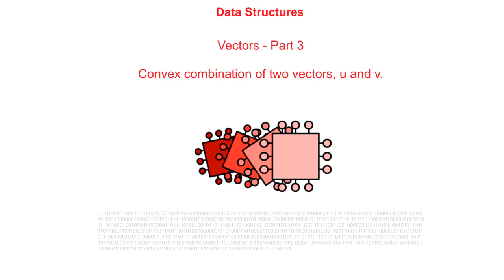In this third of five videos on vectors, we look at the convex combination of two vectors.